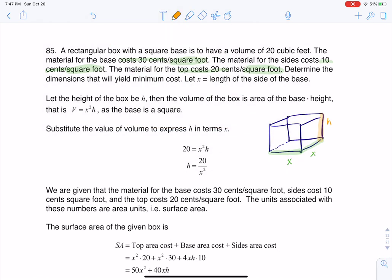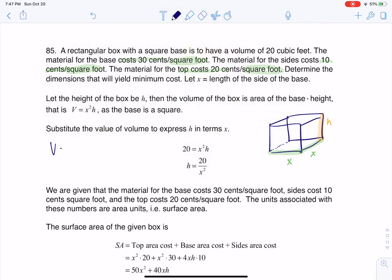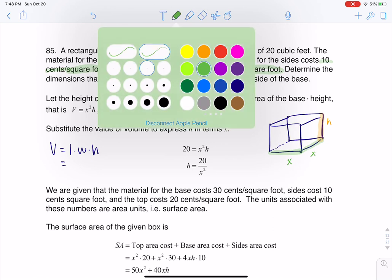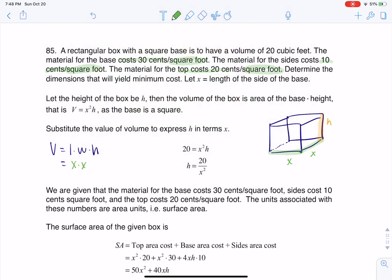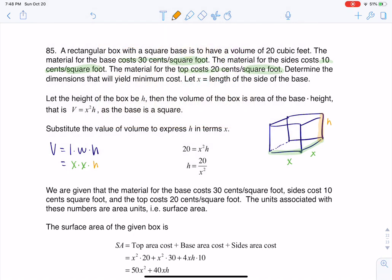And we know that volume of any rectangular box is length times width times height, but in this case it's literally going to be X times X and then we have times our H. And so that's where you see me coming up with this expression right here. Volume is X squared H, and we were also told that the volume was equal to 20.